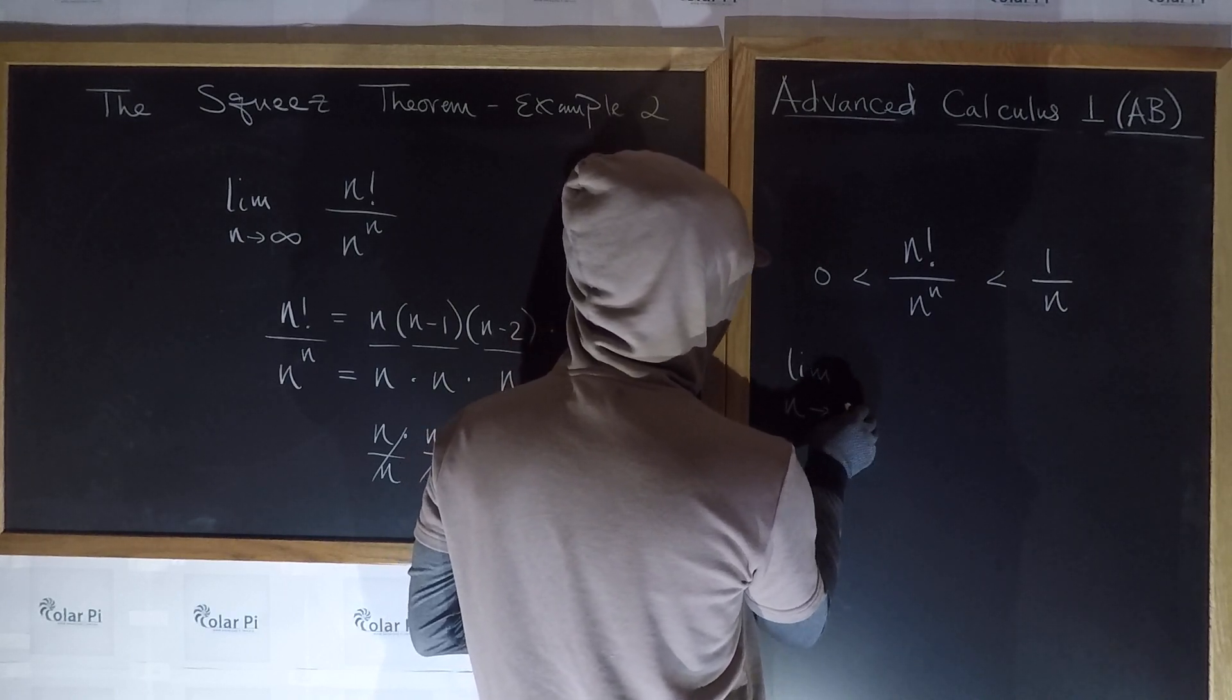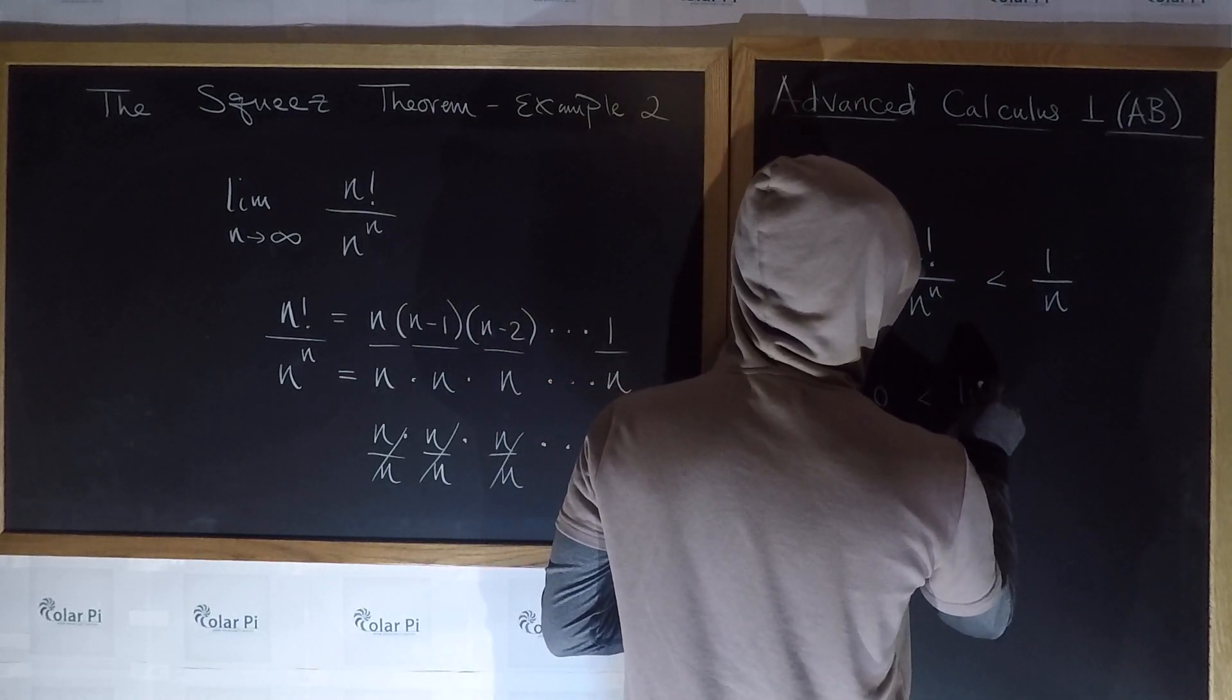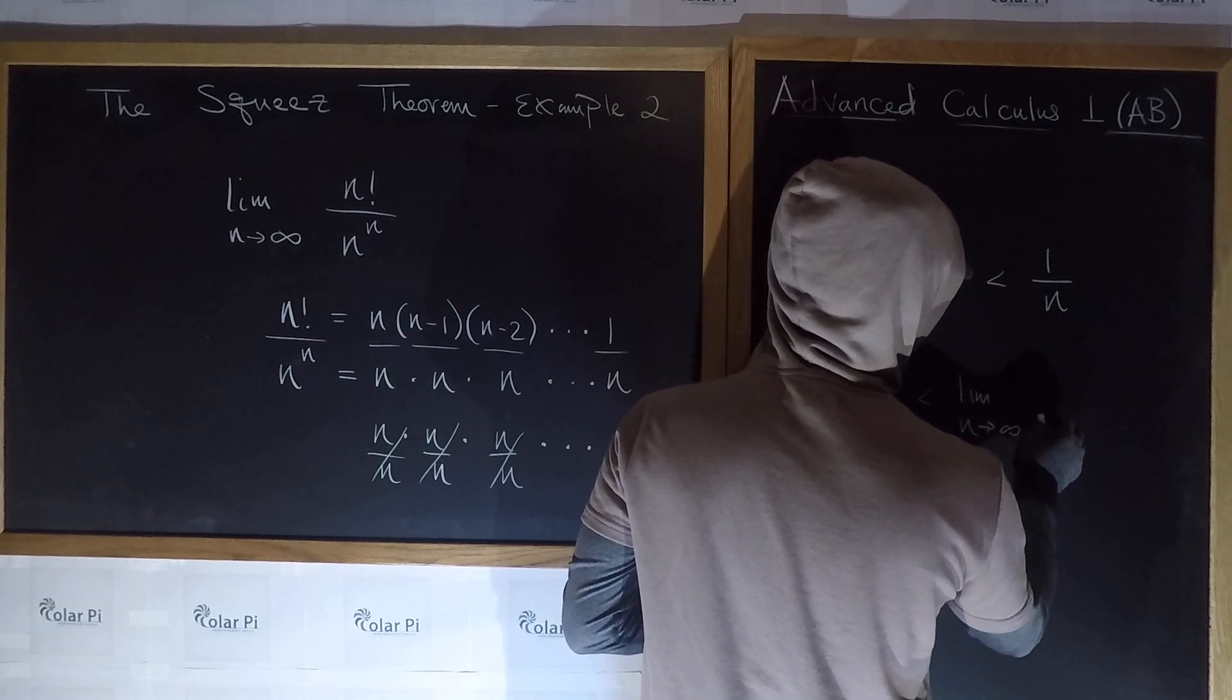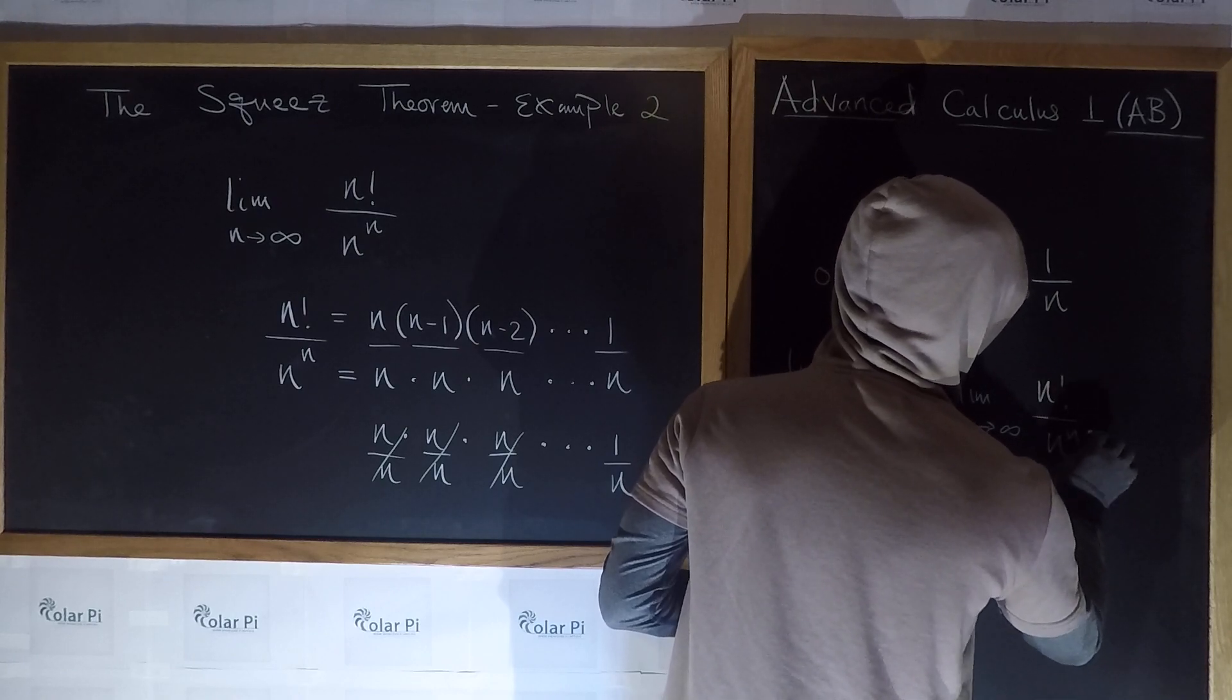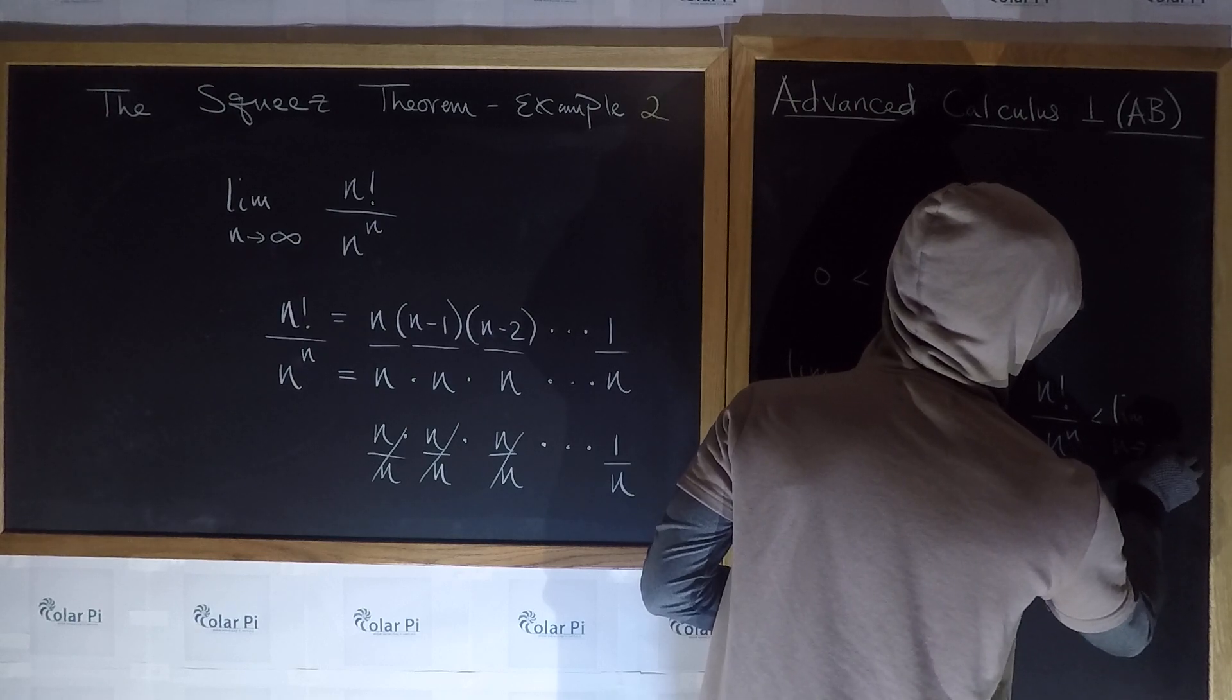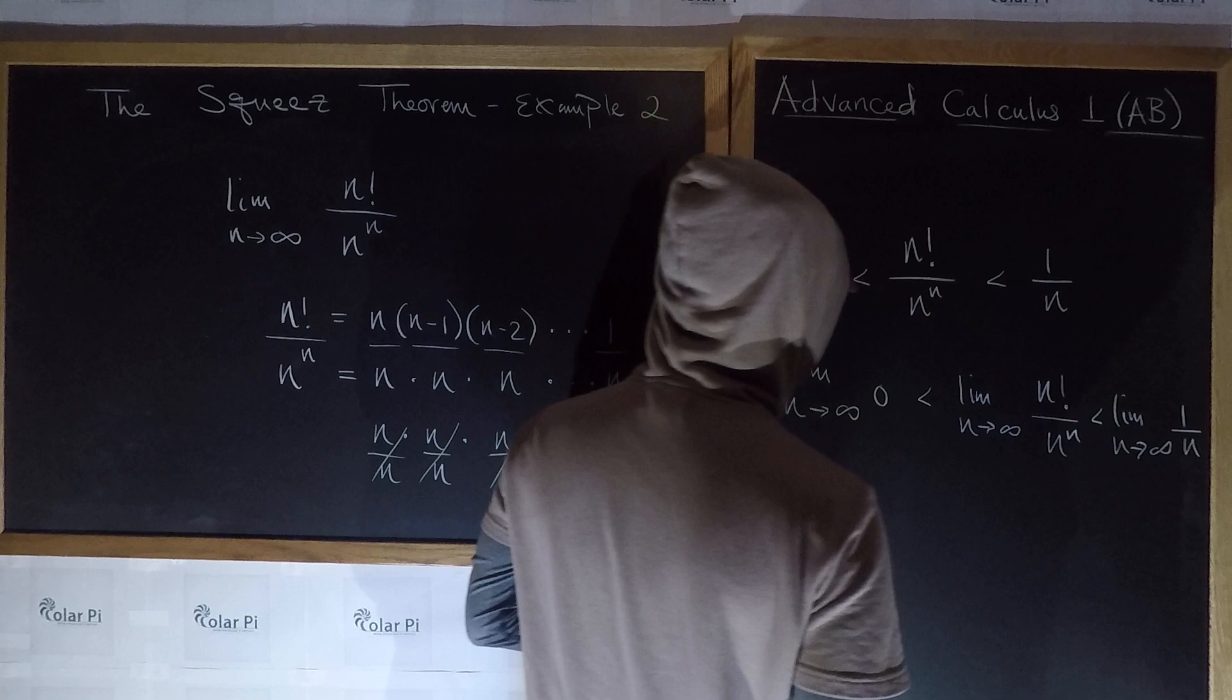Limit as n goes to infinity of 0, which is less than limit as n goes to infinity of n factorial over n to the n, which is less than limit as n goes to infinity of 1 over n.